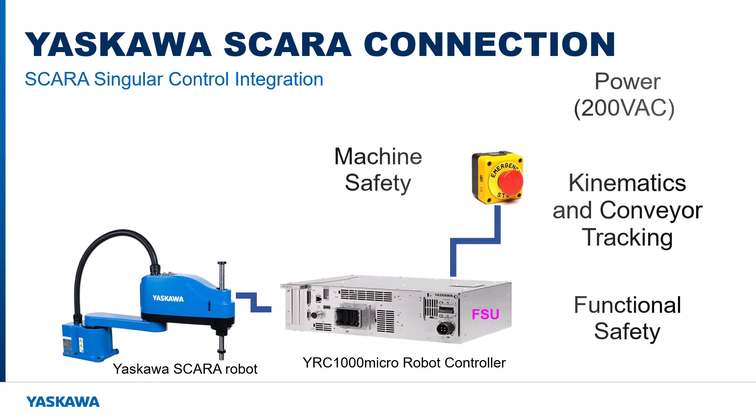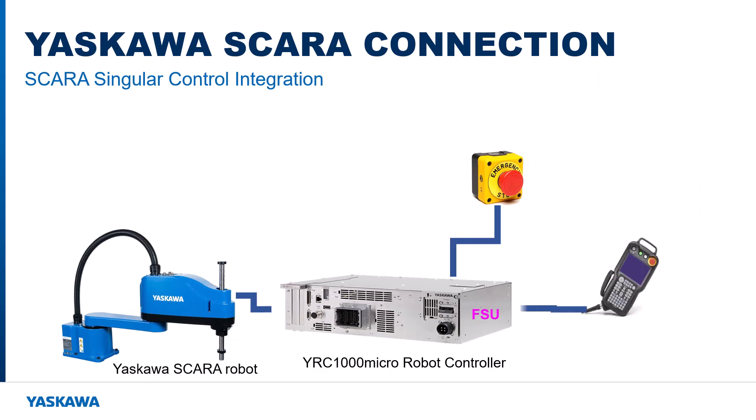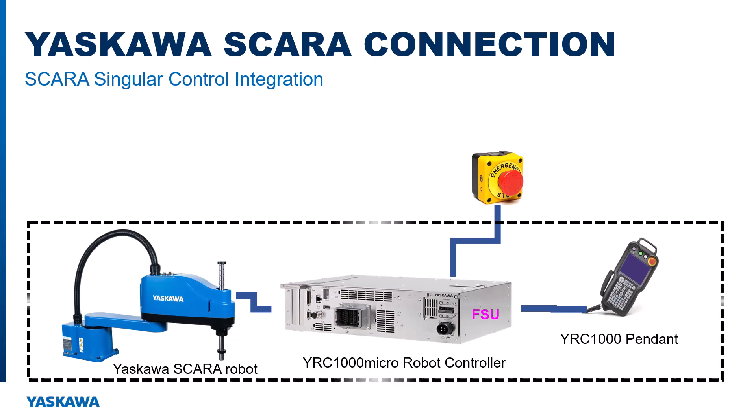This is also the connection point for the robot pendant, which is required for setup, troubleshooting, and fault recovery. These three components and their cables comprise the Yaskawa IEC SCARA robot system as a single part number. While the robot could still be programmed from the pendant using Yaskawa's INFORM language, the intention of singular control is that the machine controller hosts centralized programming using IEC 61131-3 and PLCOPEN programming standards.